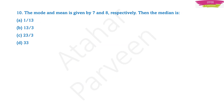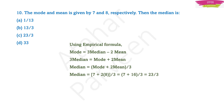Next question is from statistics. The mode and mean are given as 7 and 8 respectively. Then the median is what? For this you should know the empirical formula: mode = 3 × median - 2 × mean. Since mode and mean are given, substitute and simplify to get the value of the median, which is 23/3.